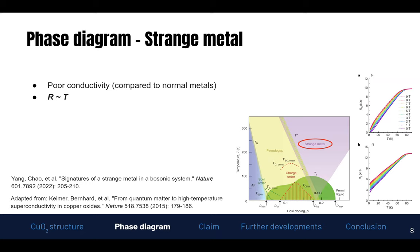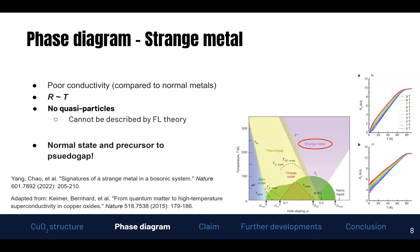We can see this linear dependence of resistance as a function of temperature in a study published this year by Young and colleagues. But perhaps what's strangest about this is that there are actually no quasiparticles in this phase, and it cannot be described by Fermi liquid theory. Perhaps most importantly, this is actually the normal state of the cuprate superconductors — for high enough temperatures you will always get this strange metal. It's also the precursor to the pseudo-gap.